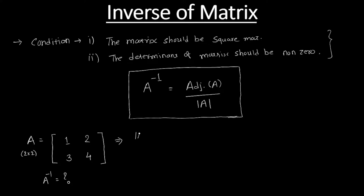The first step is to find the determinant of A. The determinant of A is the multiplication of diagonal elements: 4 into 1, minus the multiplication of off-diagonal elements: 2 into 3. So 4 minus 6 gives us minus 2. Since minus 2 is a non-zero value, we can proceed further. Now we find the adjoint of A.